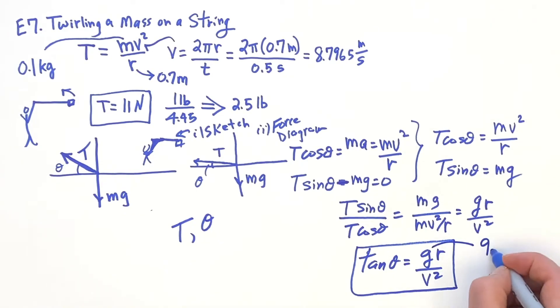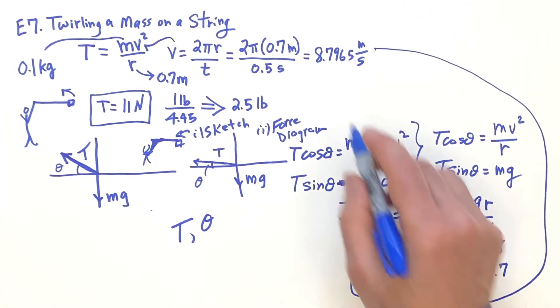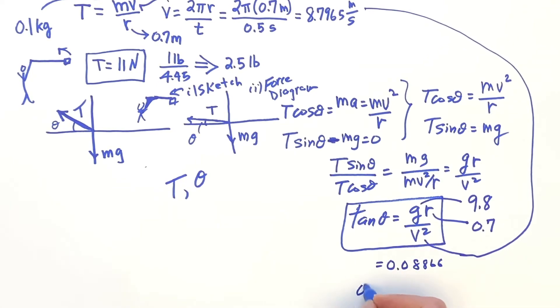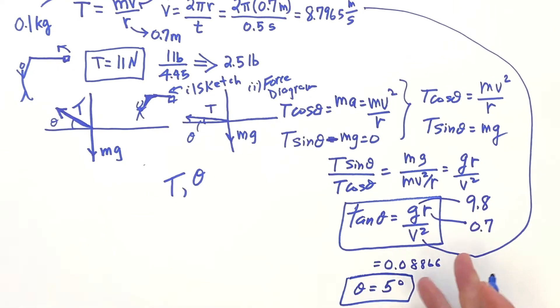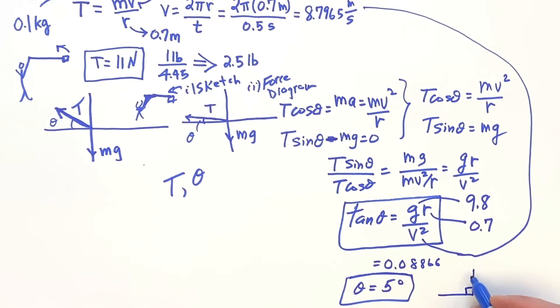And if I put in for G, 9.8, I put in for R, the 0.7 meters, and I put in for V, this velocity, I then get the tangent is 0.0886, and the angle comes out to be about 5 degrees. So that's not, you know, to one significant figure it's 5 degrees. It's like 5.1 degrees. So that's a very, very, very small angle since 90, you know, gets you the right angle.